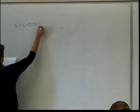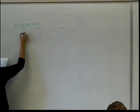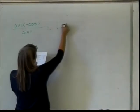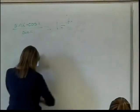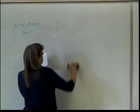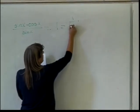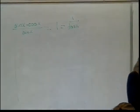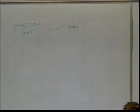Number 1 says sine of x minus cosine of x divided by sine of x equals 1 minus 1 over the tangent of x. Now, here's what you need to do to solve or to verify an identity.